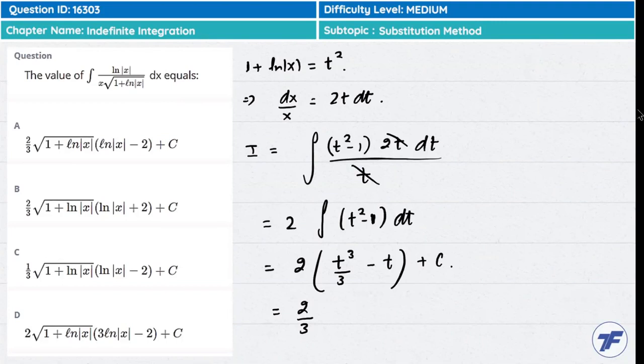t³ becomes t² times t. For this question, it's two-thirds of t³ minus 2t plus some constant. Now substitute the t value back.